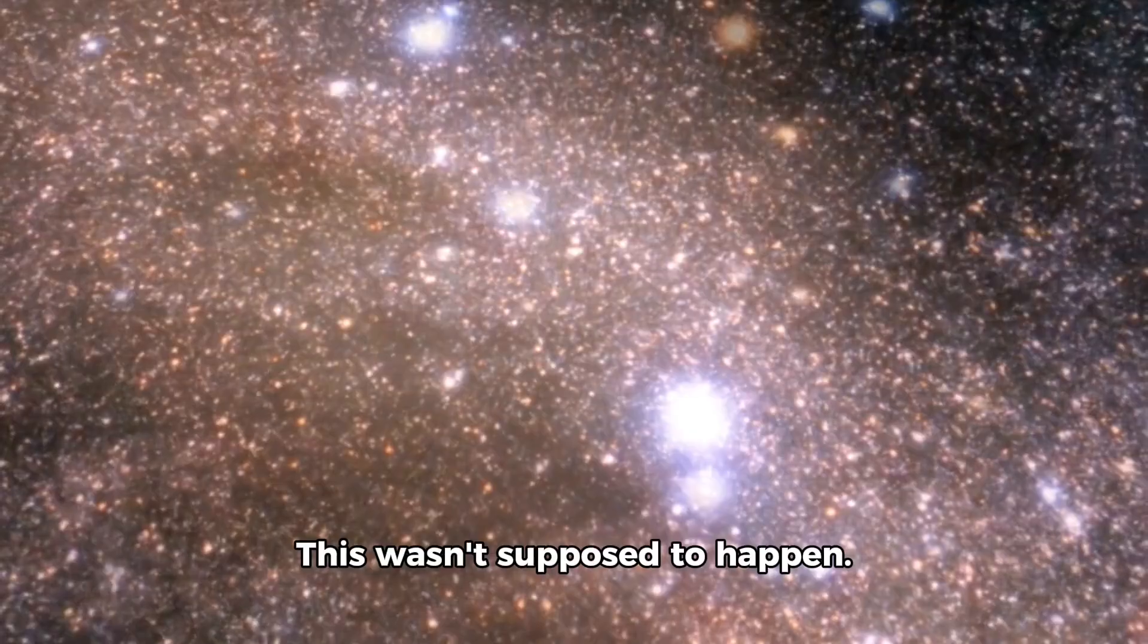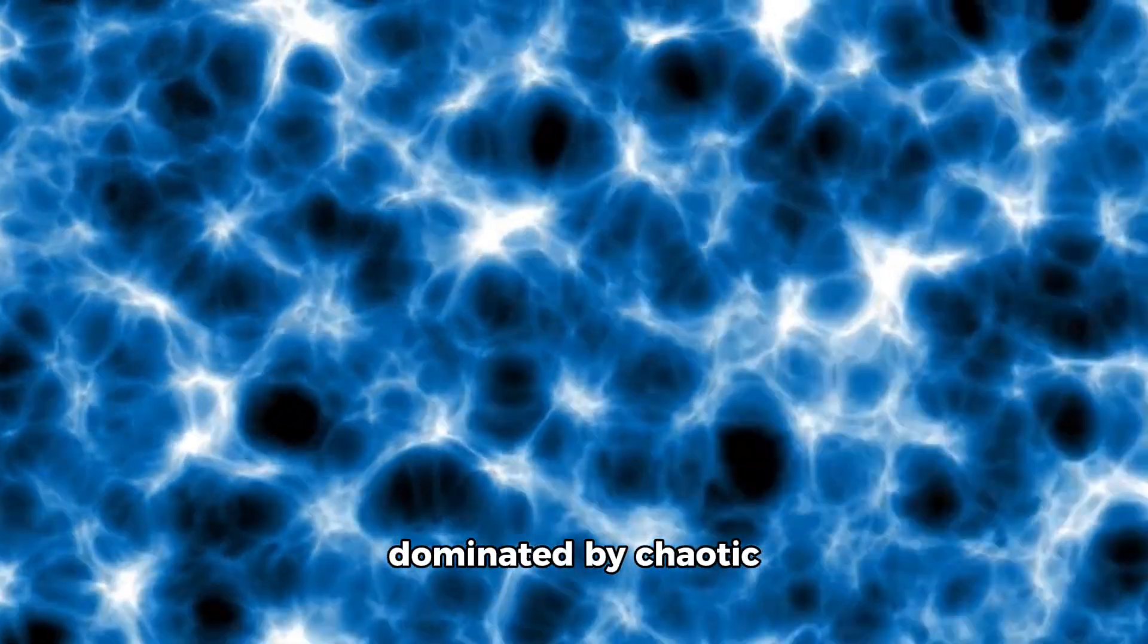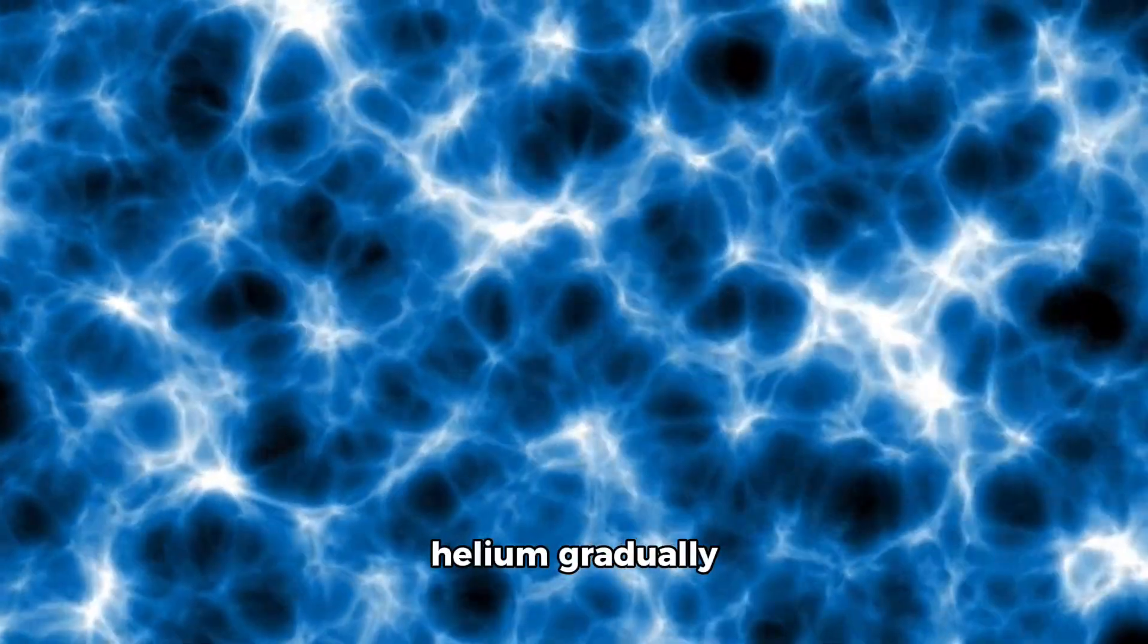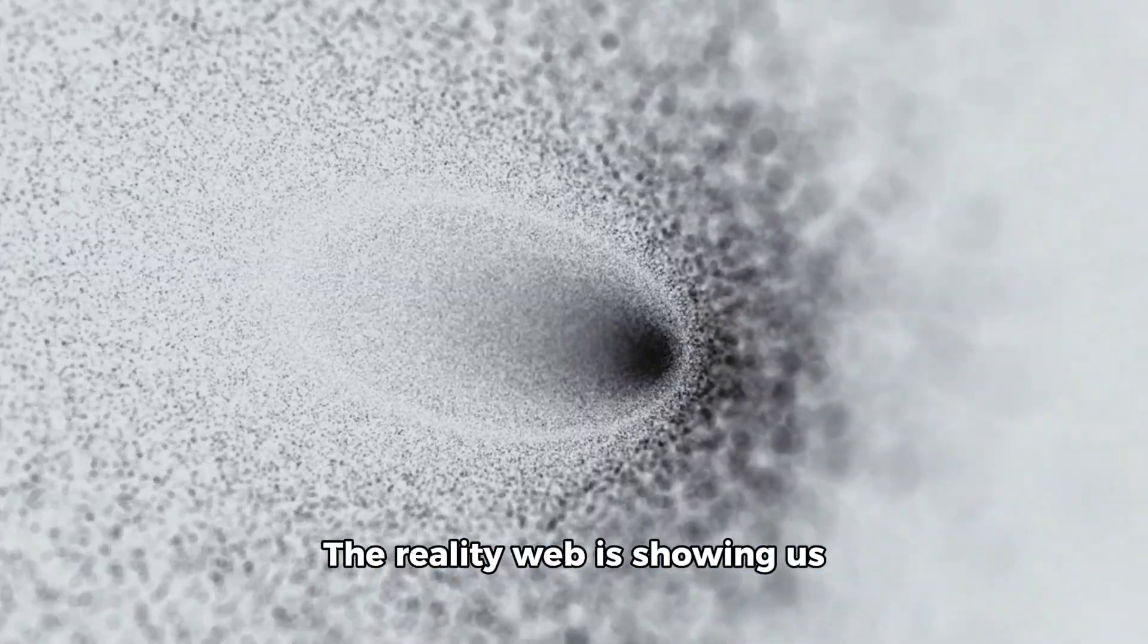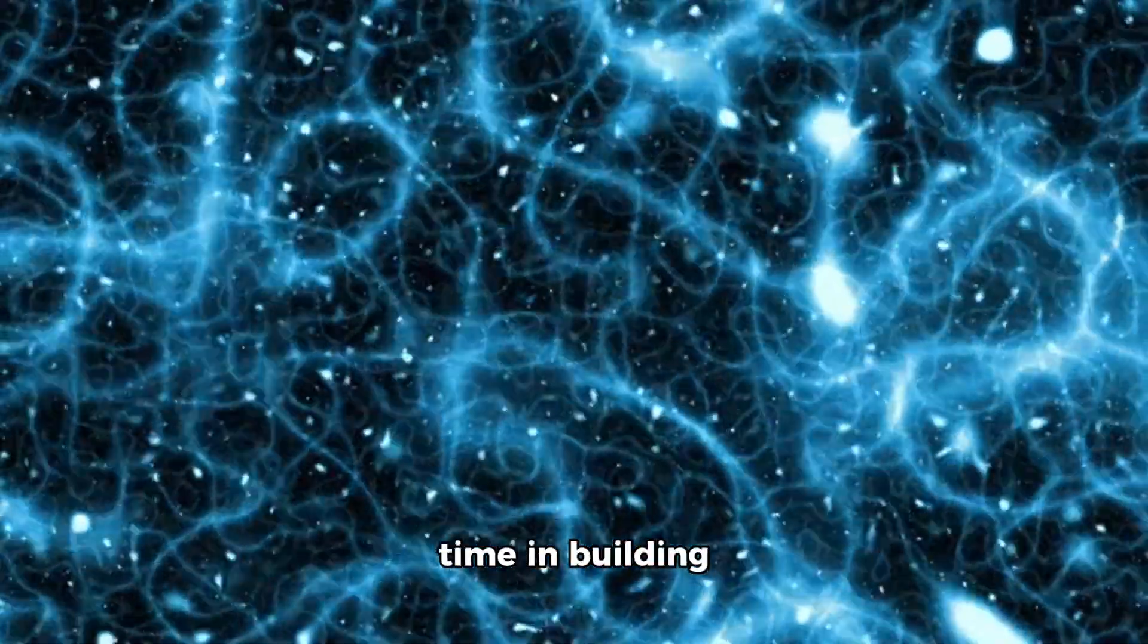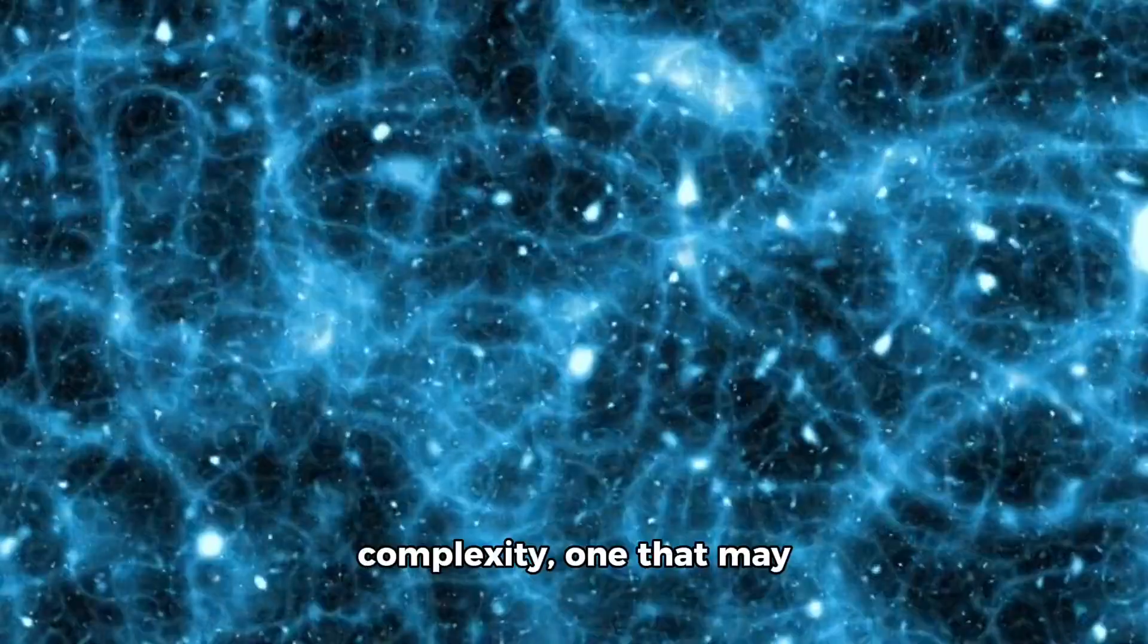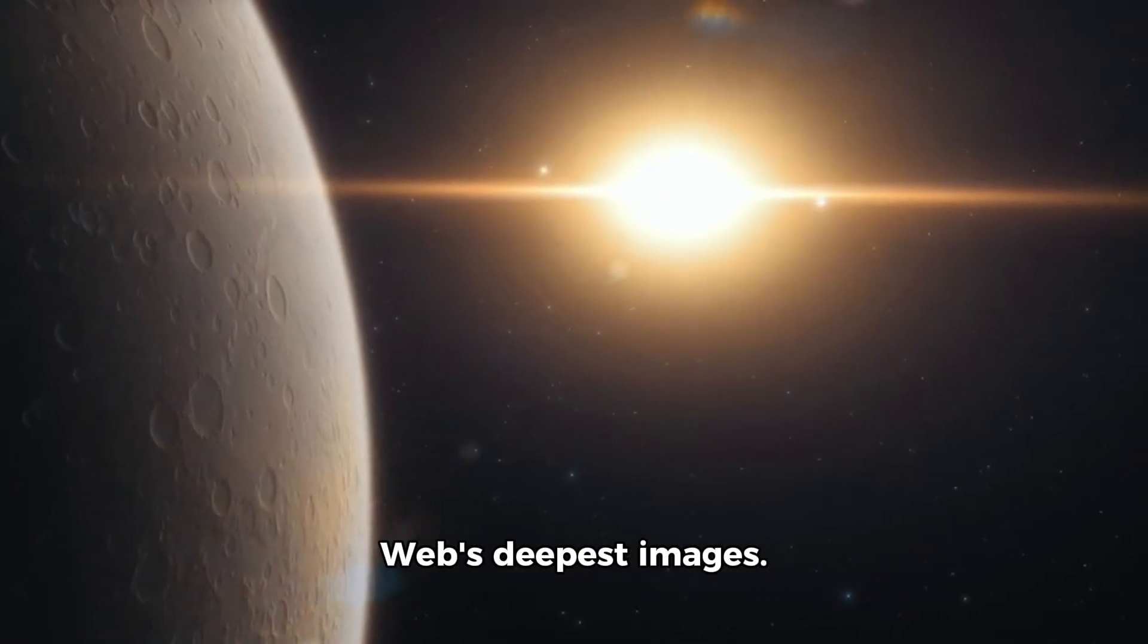This wasn't supposed to happen. In the standard model, the early universe was dominated by chaotic clouds of hydrogen and helium gradually coalescing into the first stars. The reality Webb is showing us is something else entirely. A universe that wasted no time in building complexity, one that may have been structured and active almost from the start. The suspicion astronomers have carried for years that the cosmic dawn was not a slow, simple process now has hard evidence.